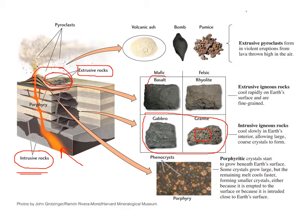Rocks like basalt and rhyolite are extrusive — if you look closely, you can't see big minerals because they didn't have time to form; they cooled too rapidly on the surface from lava. Extrusive rocks are sometimes called volcanic because they come out of volcanoes, and intrusive rocks are called plutonic — after Pluto, the Roman god of the underworld — because they cool underground.